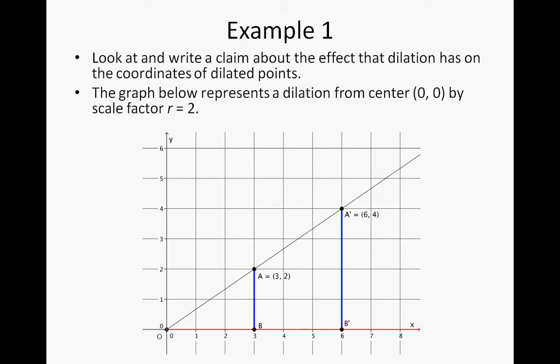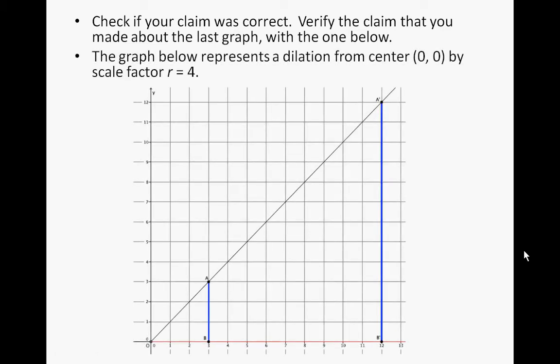Look at and write a claim about the effect that dilation has on the coordinates of dilated points. The graph below represents a dilation from the center (0, 0) by a scale factor of r equals 2. Sketch this out and look at what is happening with the points and how they relate to the scale factor. Then verify your claim with a second graph showing a dilation from the center (0, 0) by a scale factor of 4. Write down the coordinate points so you can see the relationship.